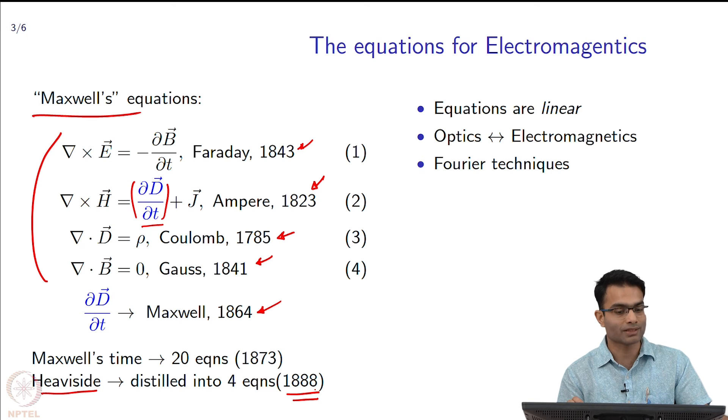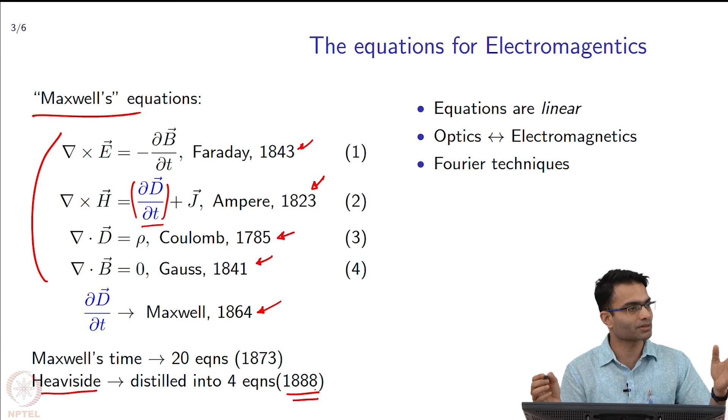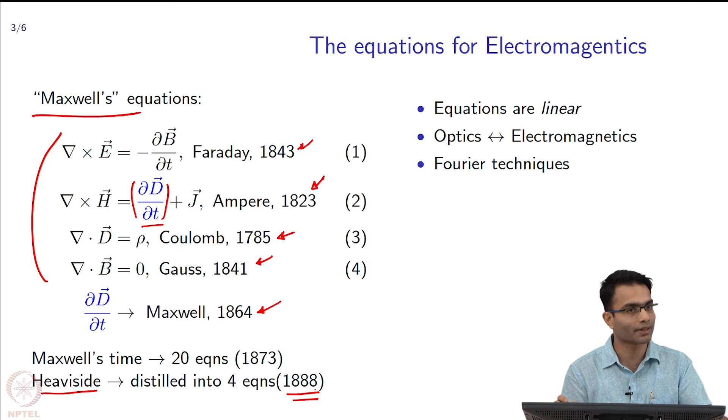These equations turned out to be consistent with the theory of relativity as well. That is why these equations survived that test also and they have been very very successful. There are versions of this which you can use for quantum mechanics also. Quantum optics is a very interesting field as well. Those equations look a little bit different, but the idea is the same.